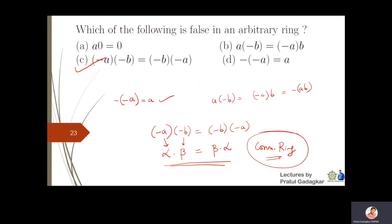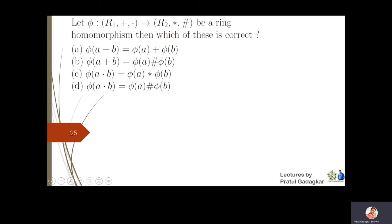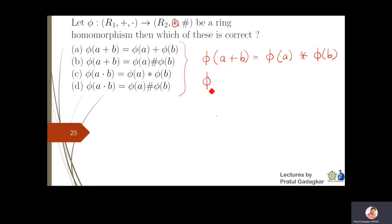Next question: φ is a homomorphism from R1 (with operations + and ·) to R2 (with operations ★ and #). The first homomorphism property is φ(a + b) = φ(a) ★ φ(b), and the second is φ(a·b) = φ(a) # φ(b), where # is the multiplication operator in the second ring.